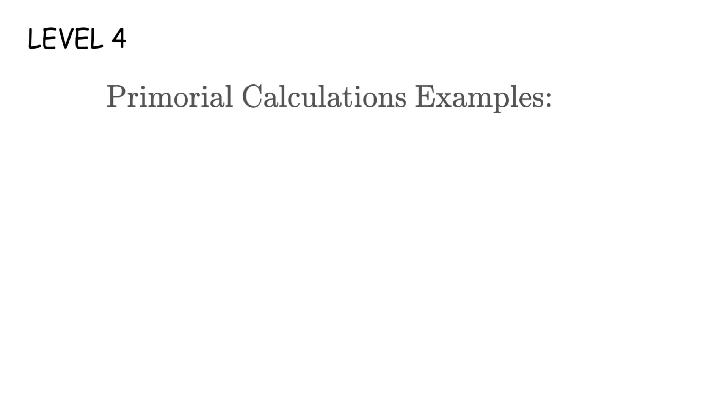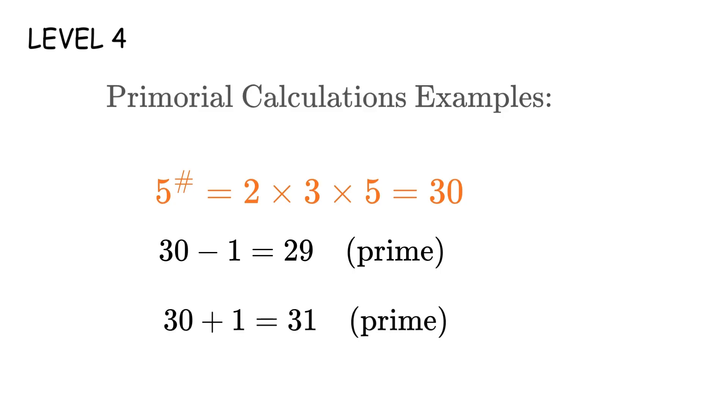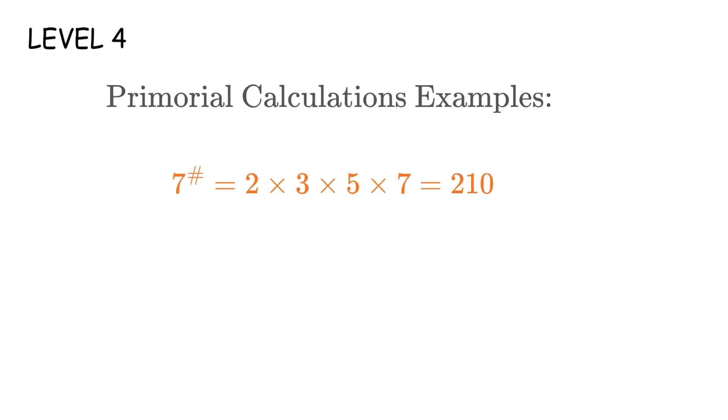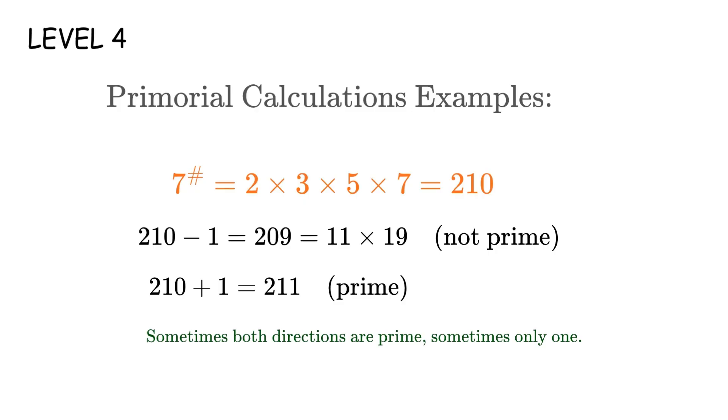Let's calculate some. Start with 2 sharp. That's just 2. Now 2 minus 1 equals 1, which isn't prime. But 2 plus 1 equals 3, which is prime. Now try 3 sharp. That's 2 times 3, which equals 6. 6 minus 1 equals 5, prime. And 6 plus 1 equals 7. Also prime. Both directions work. Now 5 sharp. That's 2 times 3 times 5, which equals 30. 30 minus 1 equals 29. Prime. 30 plus 1 equals 31. Also prime. Still working. Now 7 sharp equals 2 times 3 times 5 times 7, which is 210. 210 minus 1 equals 209, which is 11 times 19, not prime. But 210 plus 1 equals 211, which is prime. So sometimes only one direction works.